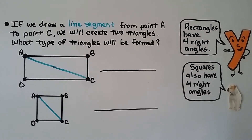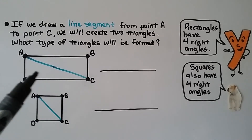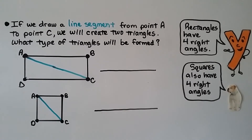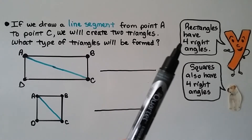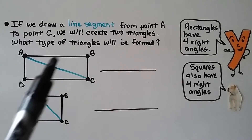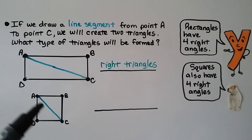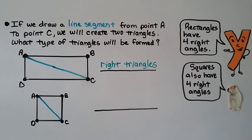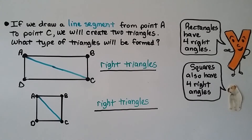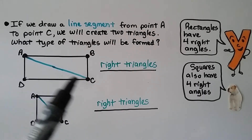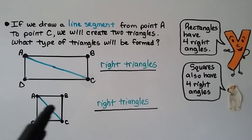If we draw a line segment from point A to point C in this rectangle, we'll create two triangles. What type of triangles will be formed? Rectangles have four right angles, so that must be a right angle in this triangle and a right angle in that triangle — right triangles. And if we draw a line segment from point A to point C in this square, we will also create two triangles. Squares also have four right angles, so we have a right angle here and a right angle here — we made right triangles again. By drawing a diagonal line segment from point A to C, we created two right triangles in both the rectangle and the square.